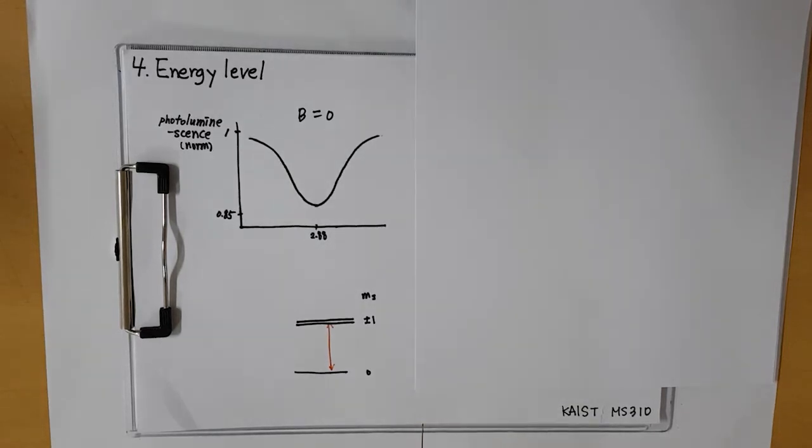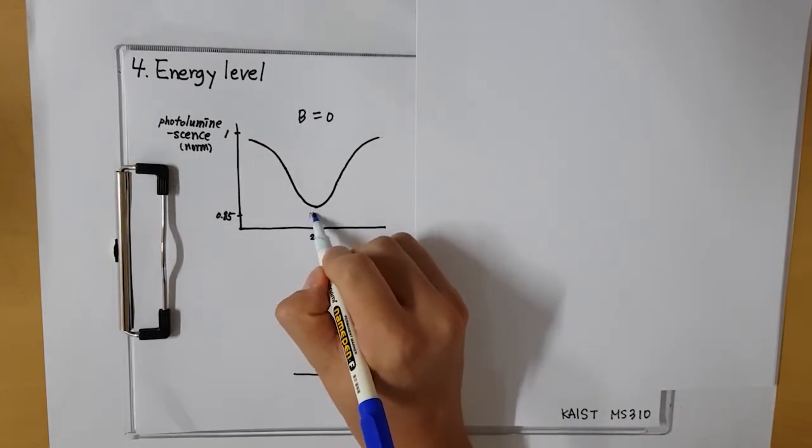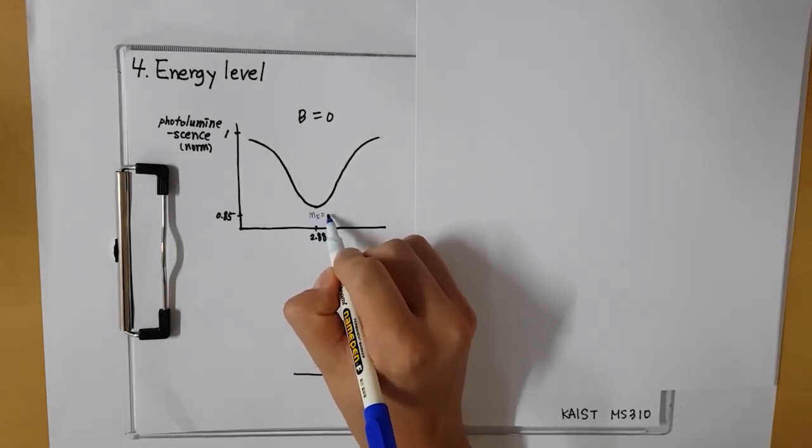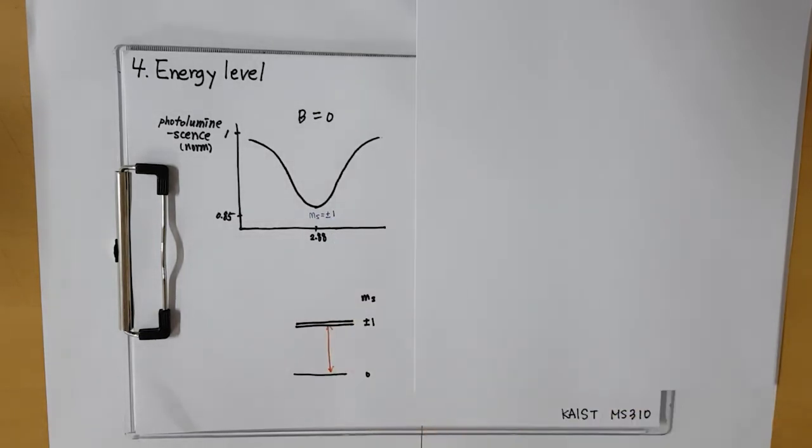Look at this graph. We can check the intensity of the photoluminescence using the microwave's frequency 2.88 GHz is smaller than those using other frequency. This is because the electrons are excited to the ms plus minus 1 state and some of them go through the non-radiative transition.